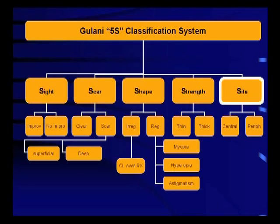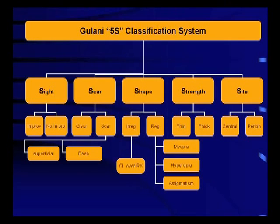The next S is site of involvement. Central pathologies are visually more detrimental than peripheral pathologies. Using this 5S protocol, we can determine which S factors are involved and how many, in order to select a single or staged surgical approach to build the cornea for final reshaping with the excimer laser towards unaided emetropia.